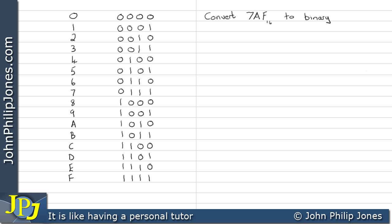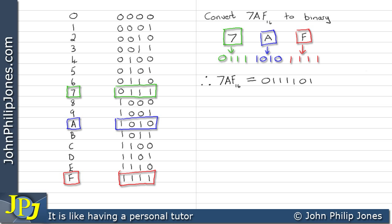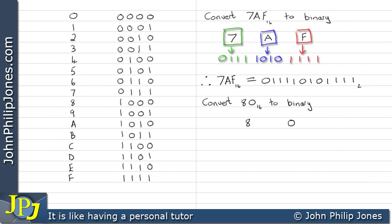Let's have a look at this example. We spread out the seven, the A, and the F. Then we look for F in the table — we can see it here, which is all ones. We then go looking for A in the table and we can see that pattern, so we write that pattern down. Then we go looking for seven in the table, which we can see is that nibble, and we write that nibble down. Consequently, 7AF in hexadecimal is equivalent to the following binary number.